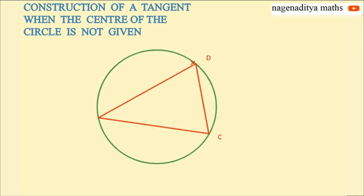So in this problem C is the given point and we have to construct a tangent to the given circle passing through the point C.